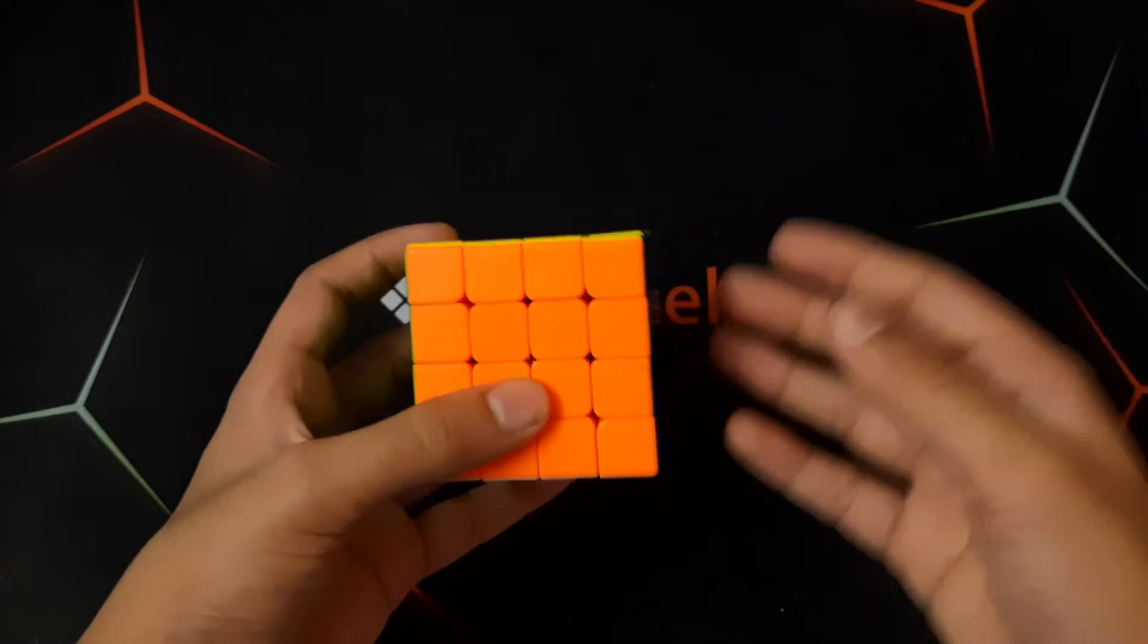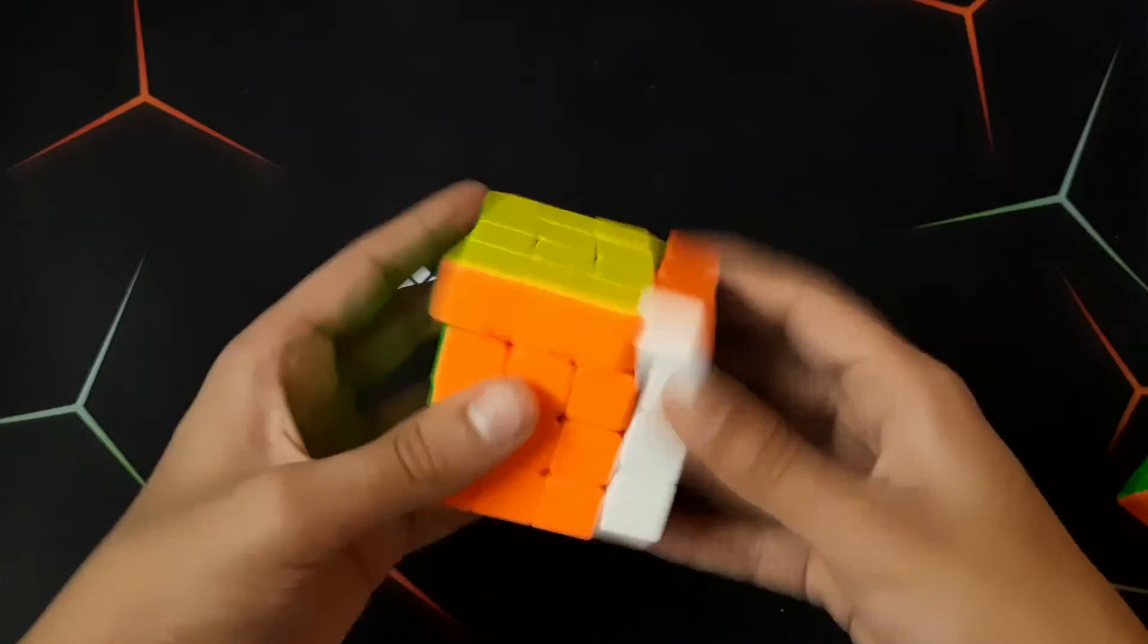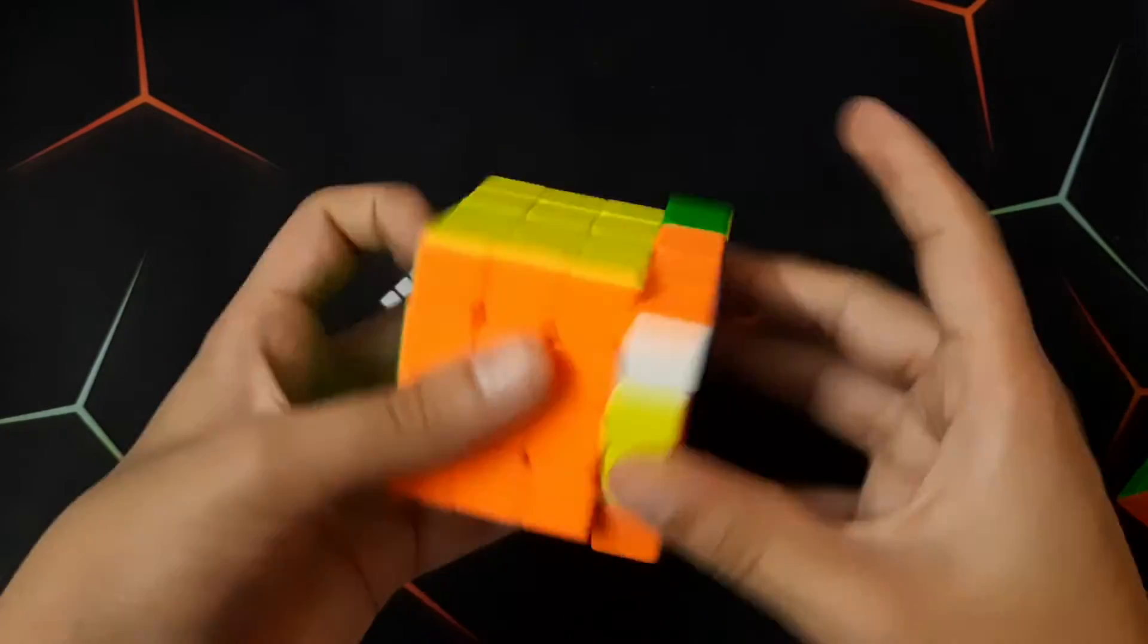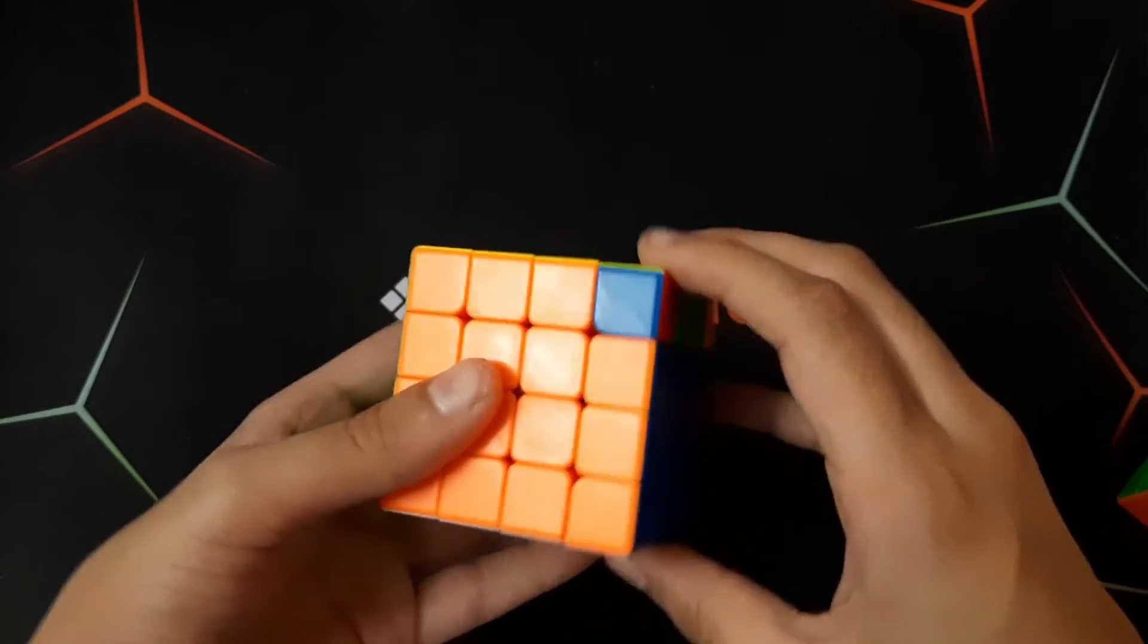So the inner layer is also very fast like the outer layer. Out of the box, the Melong 4x4 turns very, very nice, and it's better than the regular Melong 4x4.